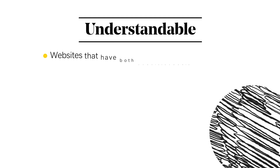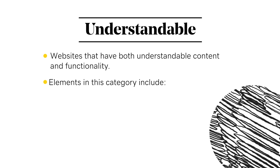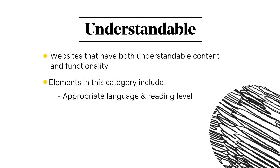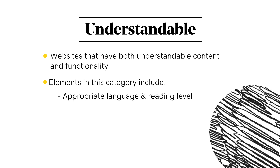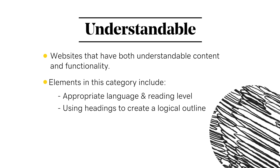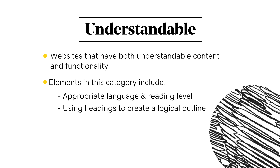Understandable stands for websites that have both understandable content and also understandable functionality. Elements of an understandable website include appropriately targeted language and a reading level typically at or below 9th grade. You really want to make sure that this works for everyone in your audience. Breaking up long articles with headings or using headings in the correct numerical order to create a logical outline on the page.